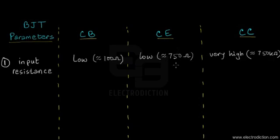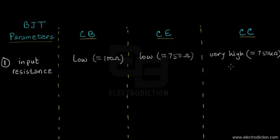In the case of the Common Collector mode, the input resistance is exceptionally high — about 750 kilohms, which is approximately one thousand times larger than that of the Common Emitter mode. That's the key difference in terms of input resistance.